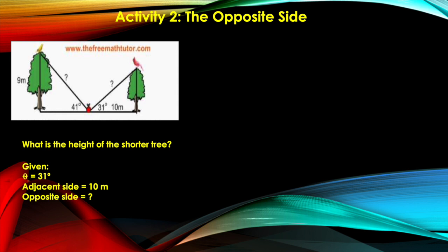And the opposite side, which is represented by the height of the shorter tree, is unknown. So we're calculating the height of the shorter tree here. Now we think about what is the most appropriate trigonometric function that we can use here.